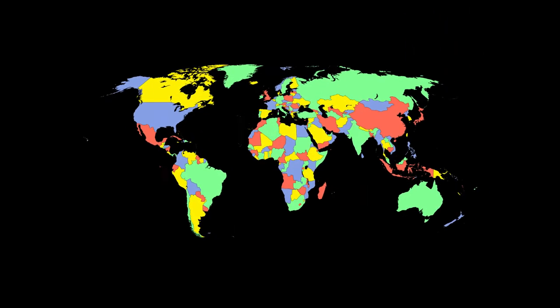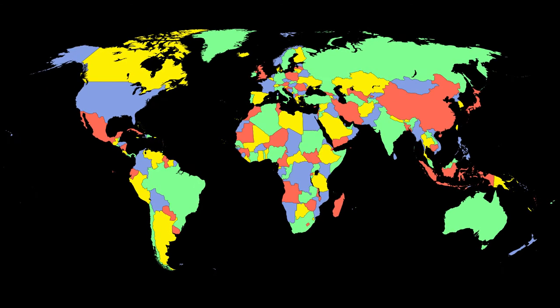You only need 4 colors for any conceivable map. So said Francis Guthrie in 1853. The proof came in 1976, the first ever theorem proved by a computer.